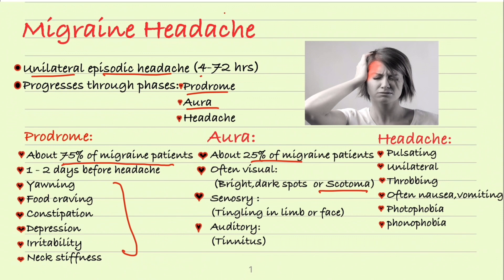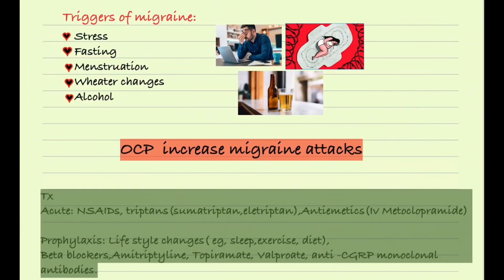Auras vary from person to person. In some patients it presents as a sensory aura where the patient feels tingling in the limbs or face, and sometimes auditory auras. The headache itself is pulsating, unilateral, and throbbing, often presenting with nausea, vomiting, and photophobia. Many patients have migraines with no clear reason, but there can be triggers. Common triggers include stress, fasting, and menstruation in women.